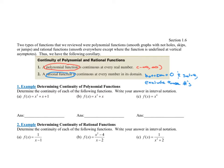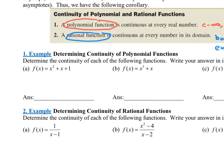Every work-shown problem on the test and in your lecture notes requires you to show work — no work, no credit. The first problem says determine the continuity of each of the following functions, with answers in interval notation. The first function is x squared plus x plus one. That's a polynomial, so I write 'poly,' and every polynomial is continuous on the interval negative infinity to infinity.